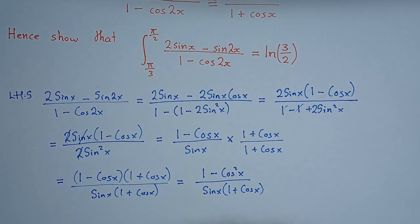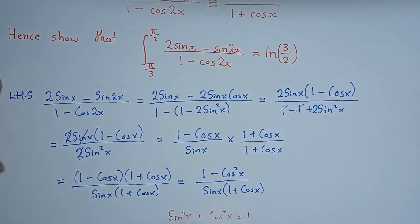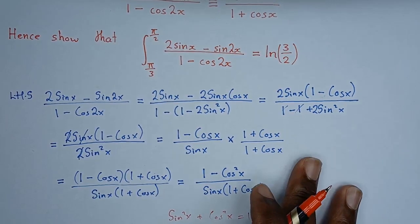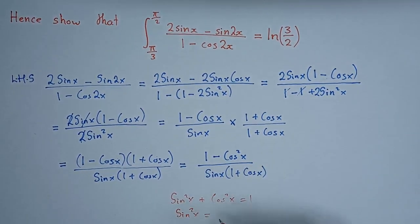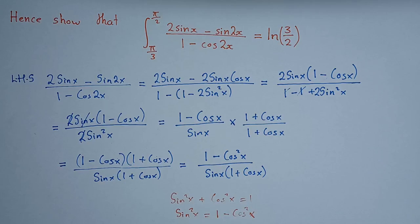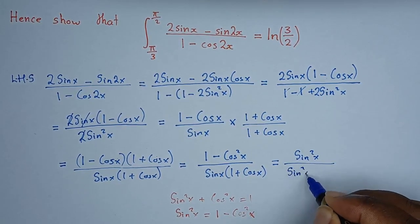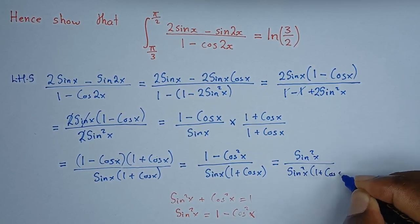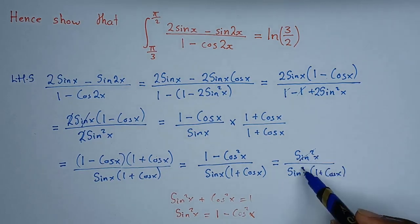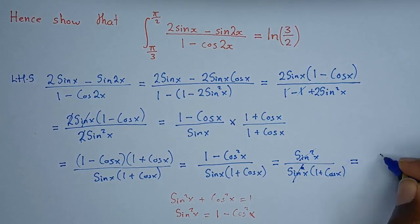Now we use the Pythagorean identity: sin²x + cos²x = 1, which means sin²x = 1 − cos²x. So 1 − cos²x is the same as sin²x. Substituting gives sin²x / (sin x · (1 + cos x)). We cancel one sin x, leaving sin x / (1 + cos x), which proves the identity.